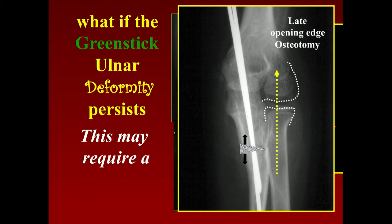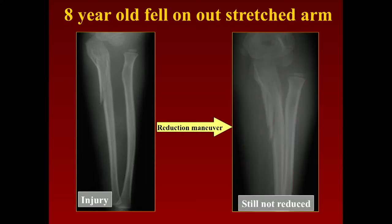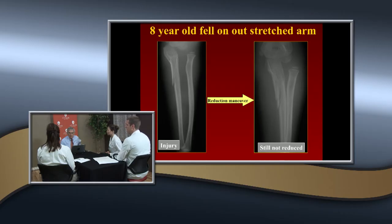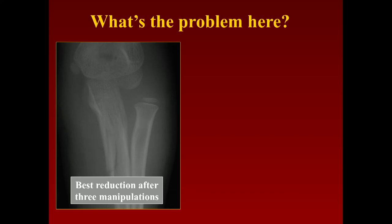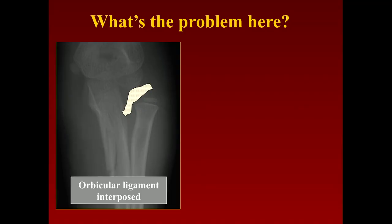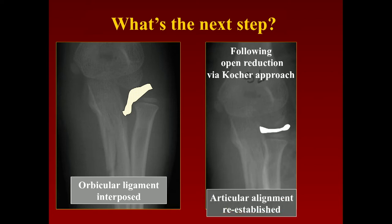Here's an eight-year-old who fell on an outstretched arm. After reduction maneuver three times, the result is not acceptable. So now it needs to go to the operating room — to stabilize the ulna. This was done years ago before we did a lot of stabilization. But why can't you get the radial head in? Interposed tissue — exactly. The annular ligament was interposed, as you can see here. The next step was to go ahead and take it out through a Kocher approach. Nowadays I would put a large rod down there, and articular alignment was re-established.